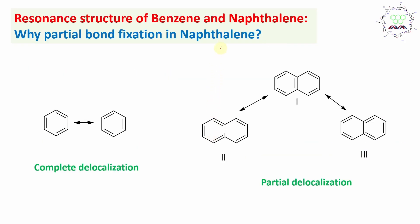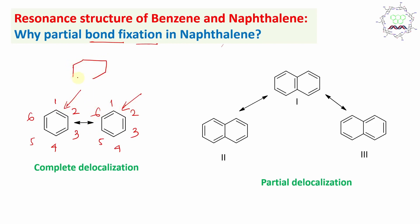But why does naphthalene have this partial bond fixation? In order to understand this, first let's understand about benzene. If you look at benzene — students, please practice this numbering and draw the structure by yourself — between carbon number 1 and 2 there is a double bond. Since it is a complete delocalization, 6 electrons are completely delocalized over all carbons — equal distribution.